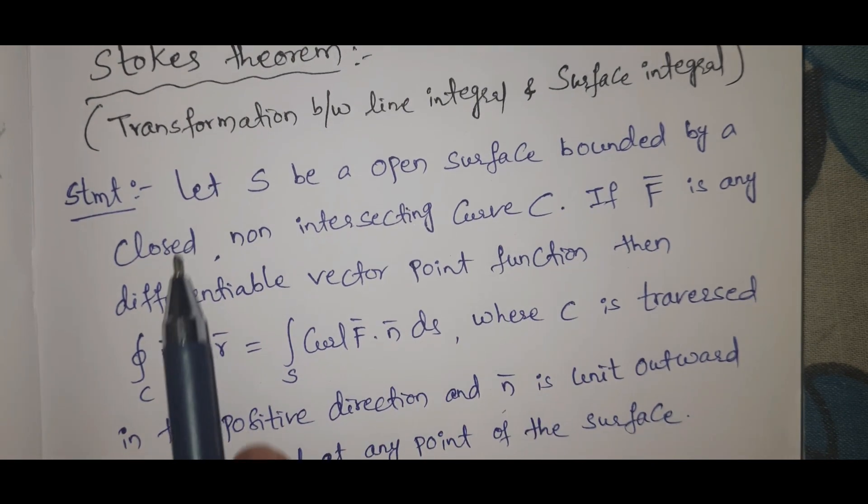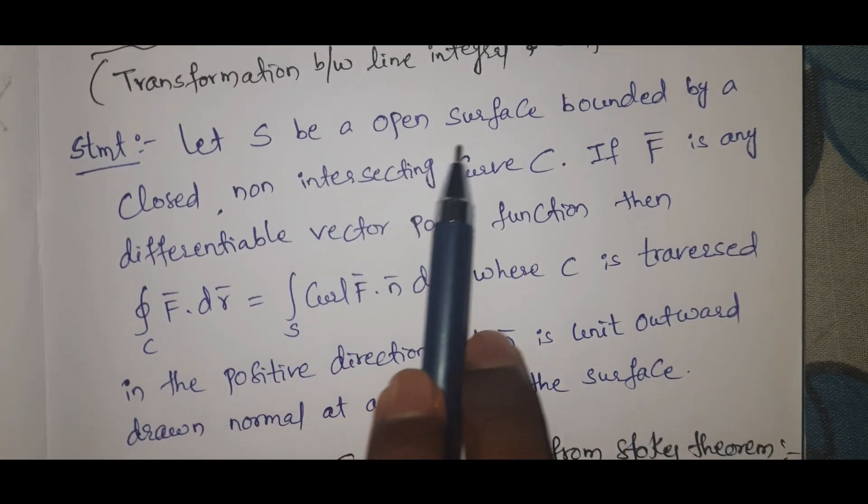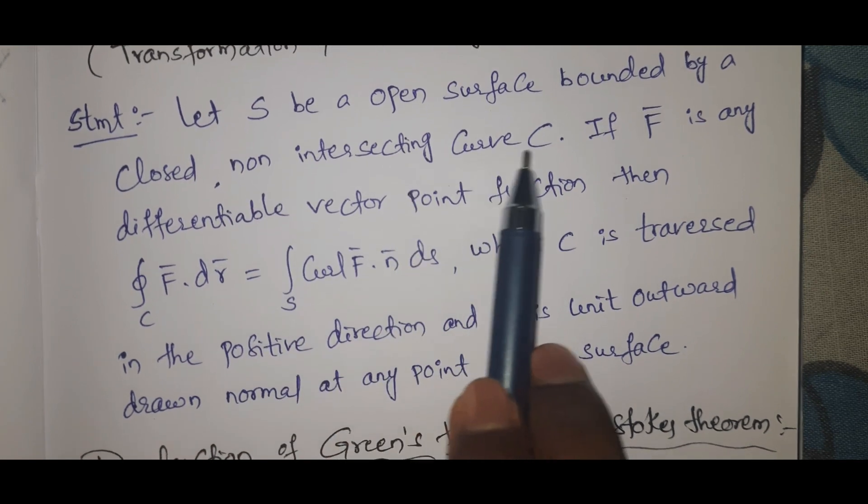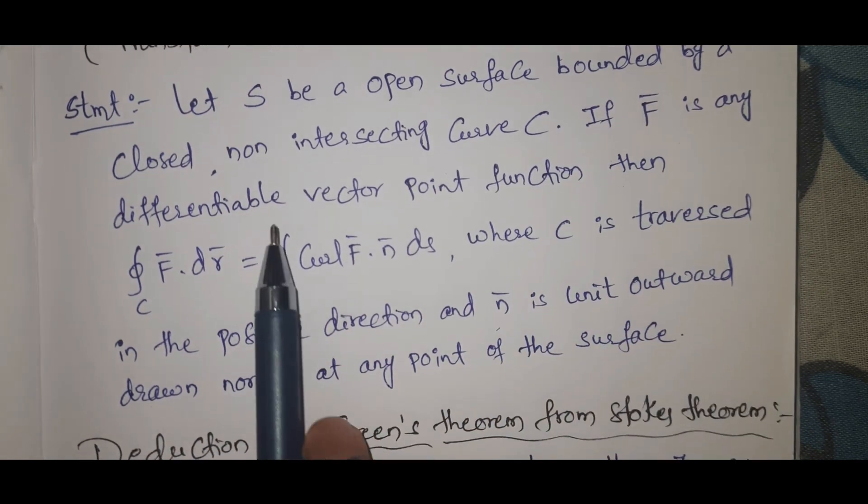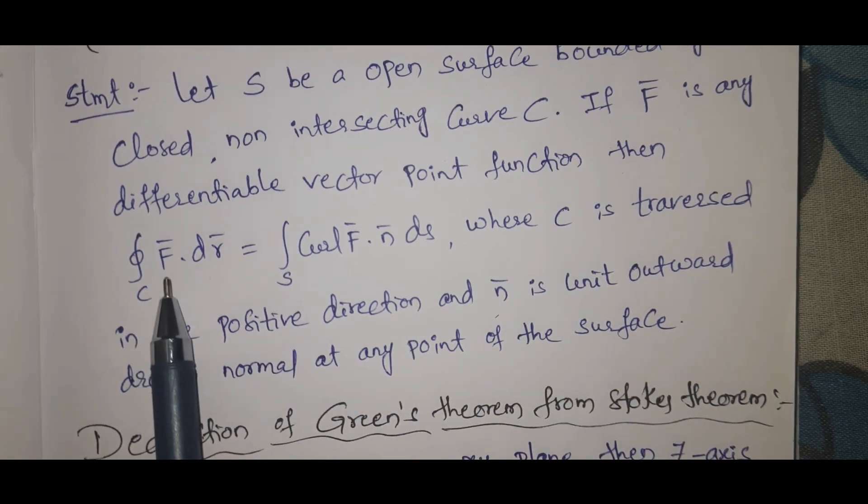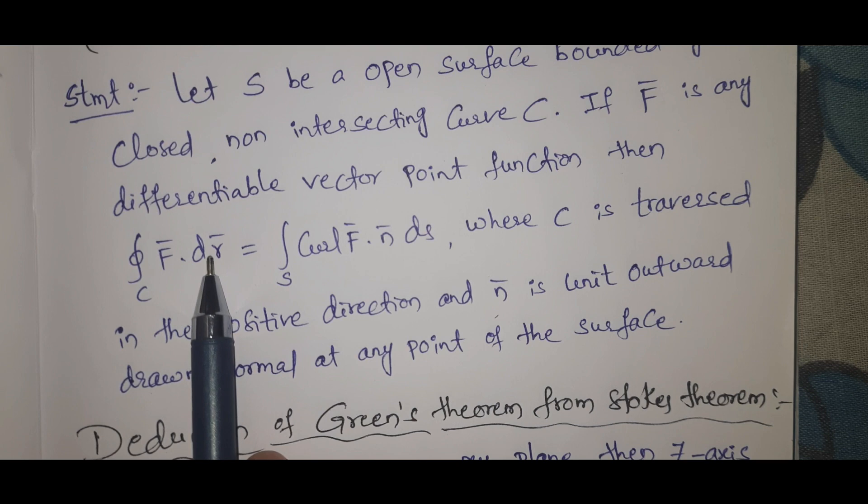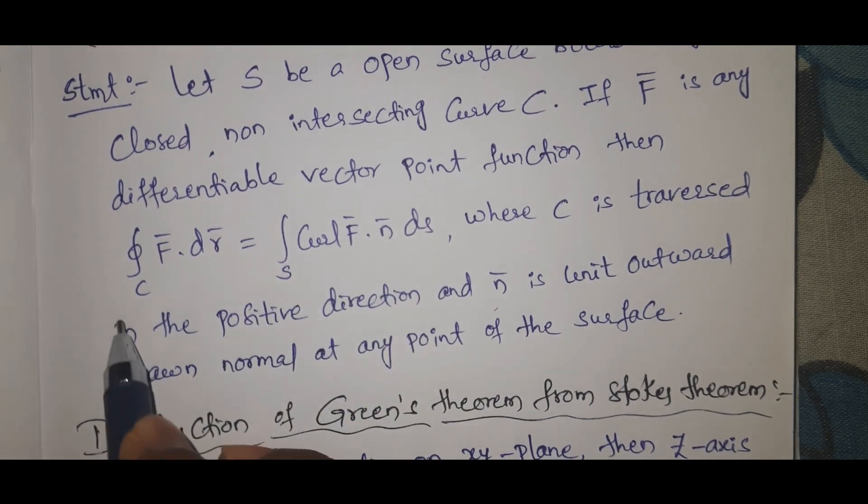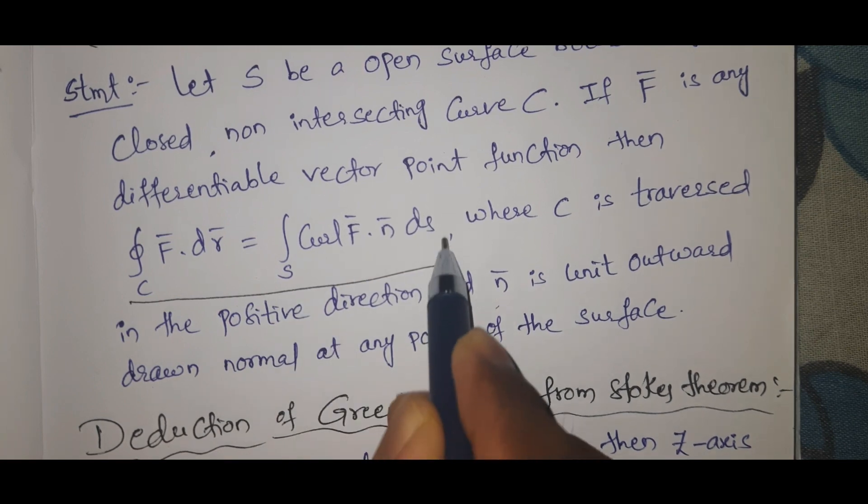Let S be an open surface bounded by a closed non-intersecting curve. If capital F bar is any differentiable vector point function, then integral C F bar dot dR. This is the line integral formula, equal to integral curl F bar dot N bar dS. This is the surface integral.